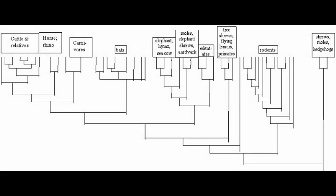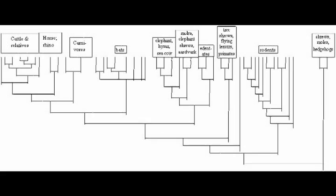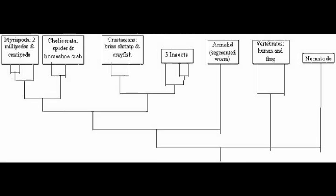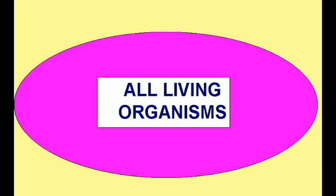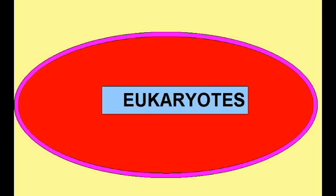Based only on anatomical, genetic, and embryological evidence, we would conclude that all life shares a common ancestry from a common ancestor. One subgroup of living things form more complex cells, and are known as eukaryotes.